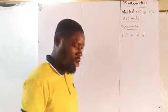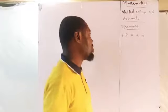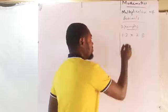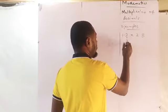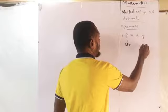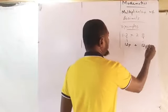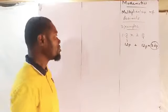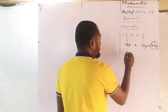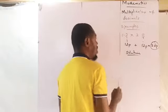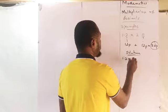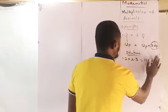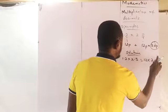The first thing you should know is that you must always try to identify the number of decimal places. This first number has one decimal place, this one has one decimal place. Add the two — you have two decimal places. Keep it there. Then come down and multiply the numbers without decimal points: 1.2 times 2.5 becomes 12 times 25.